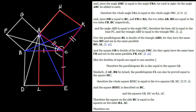Therefore, the whole square BDEC is equal to the two squares GB and HC together, because equals added to equals will generate equals: GB equals BL and HC equals CL. Therefore the whole square BDEC described on BC is equal to the squares GB and HC on the sides BA and AC respectively. Therefore, the square on side BC is equal to the squares on sides BA and AC. QED.